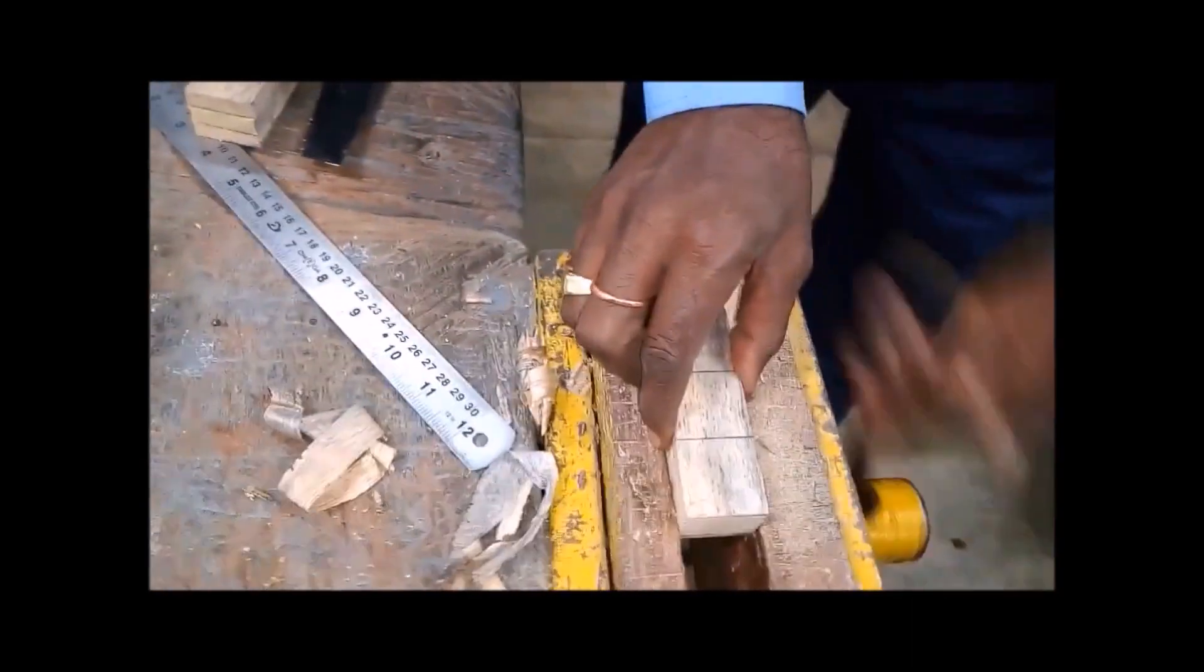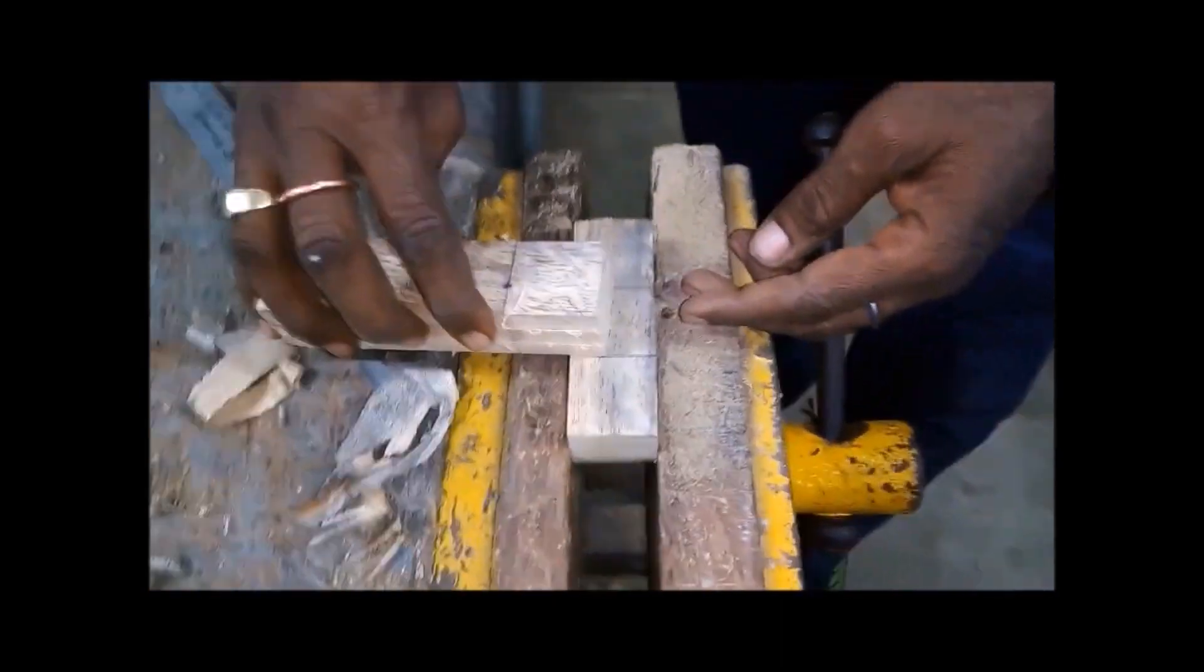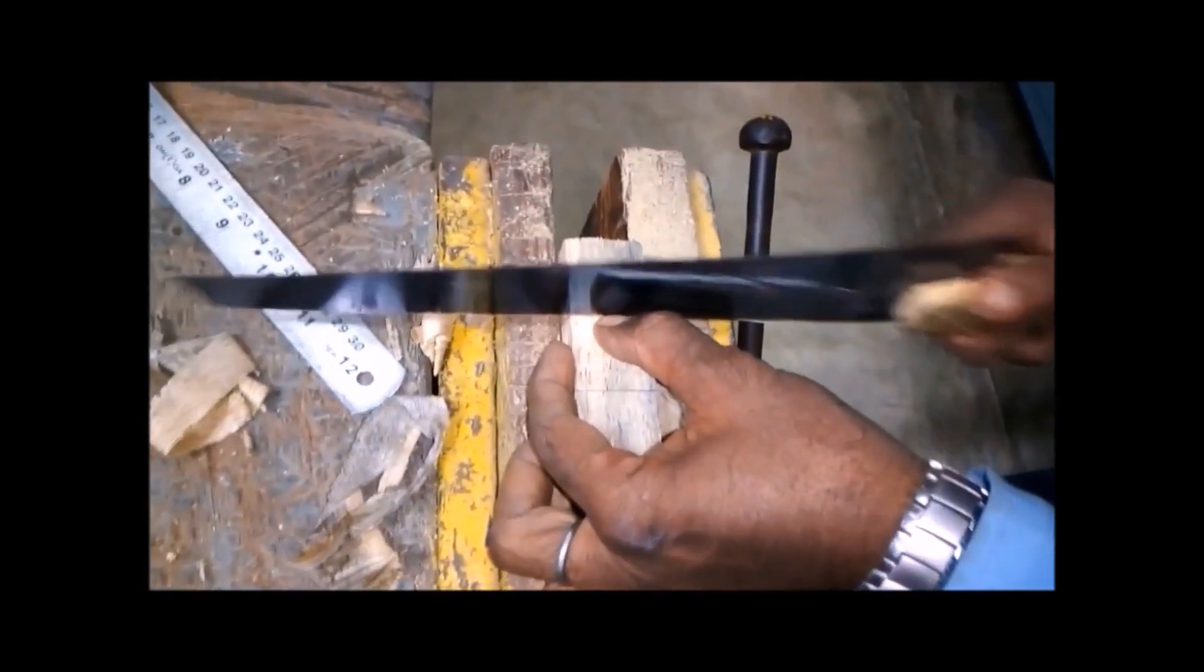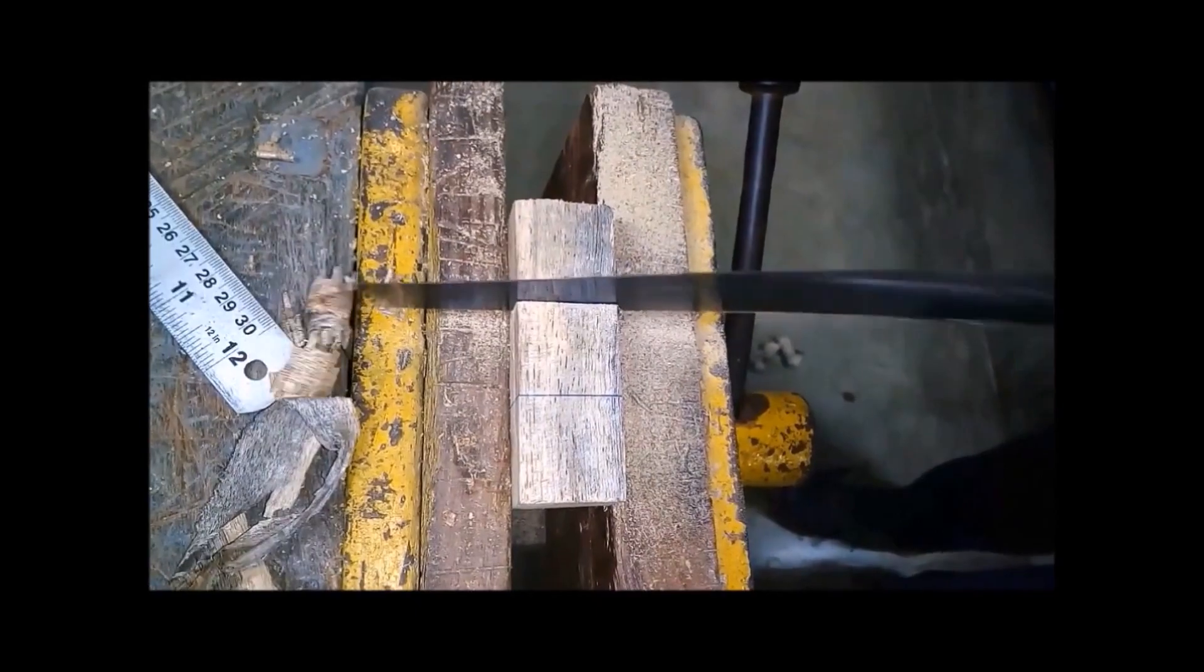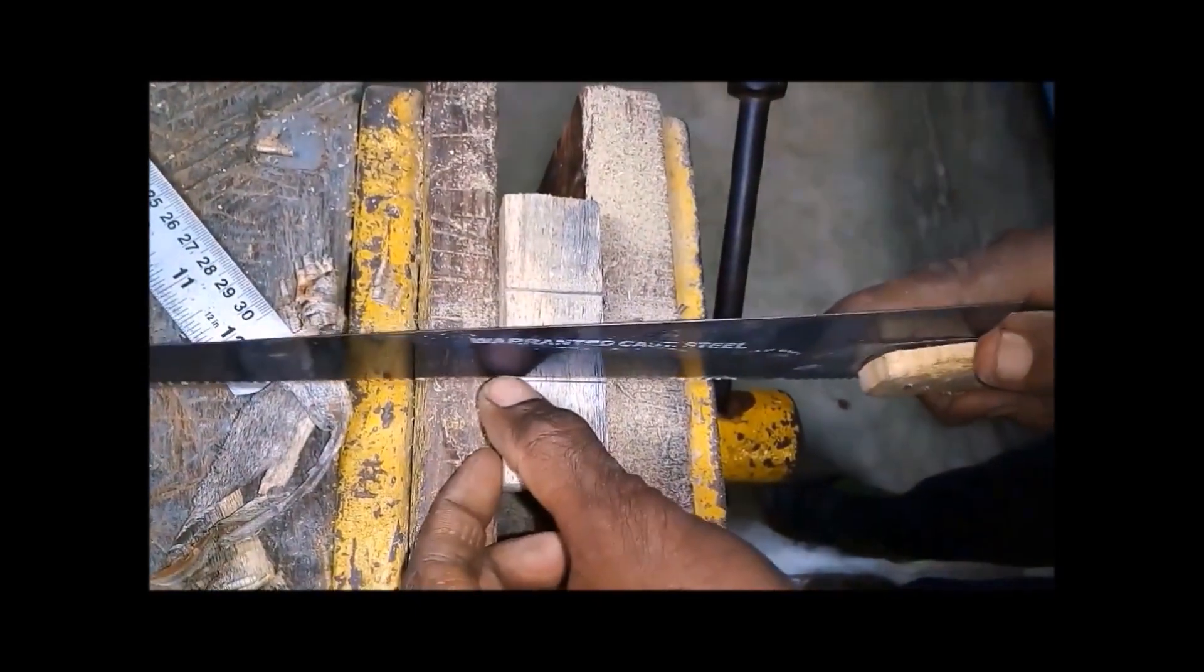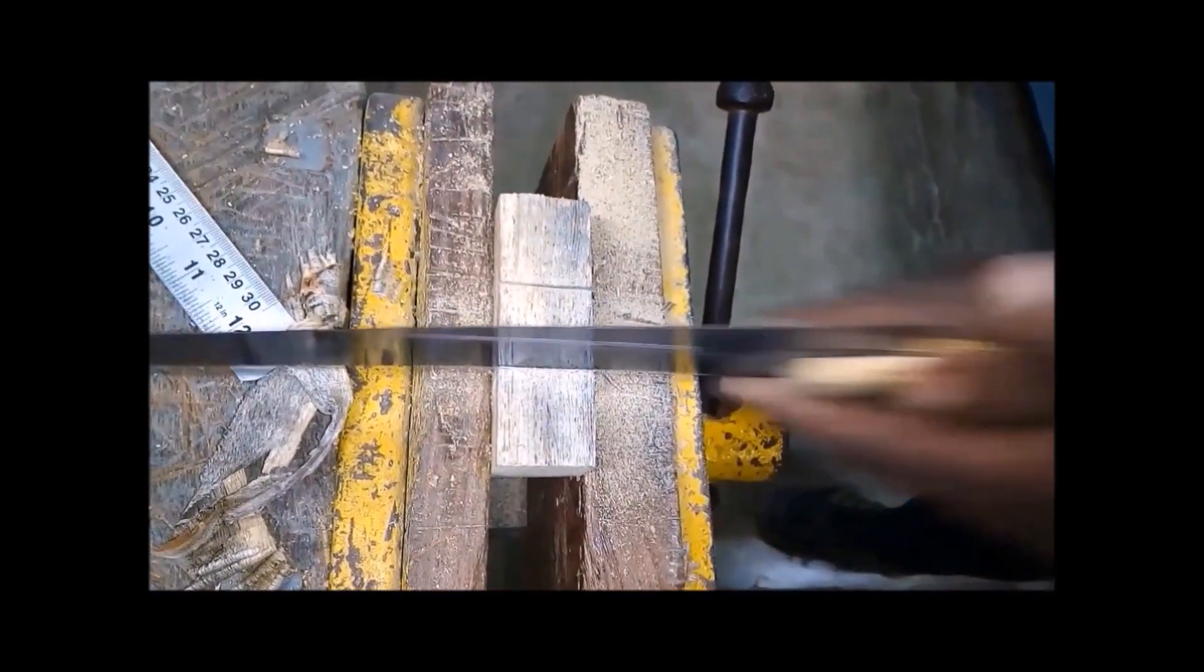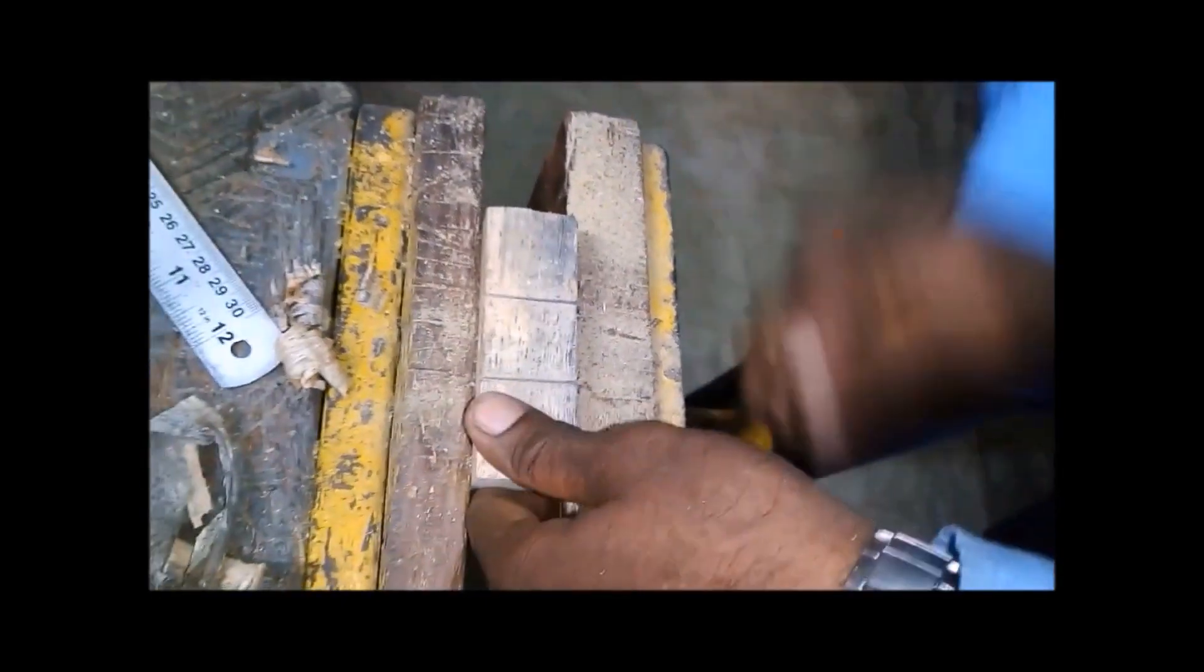Now we are taking the 100 mm length tenon member. The center portion required dimension is 16 by 16 into 9 mm. This much material we should cut on both faces with the help of ripsaw.